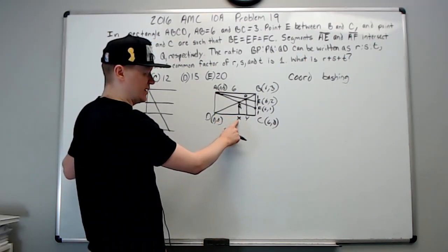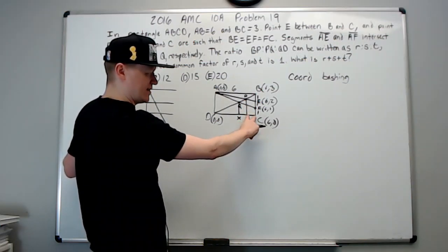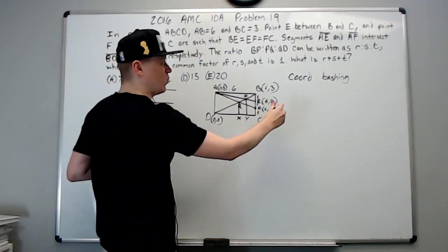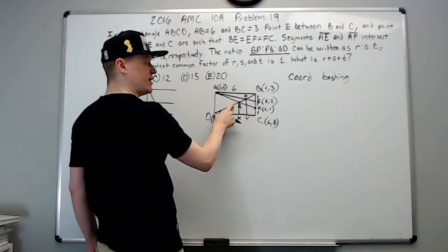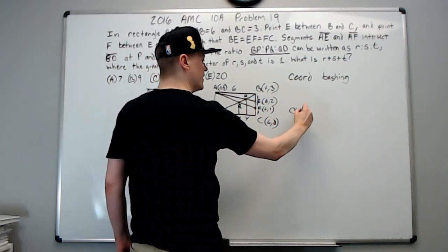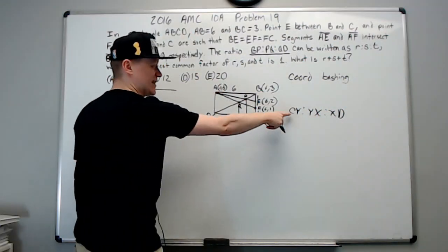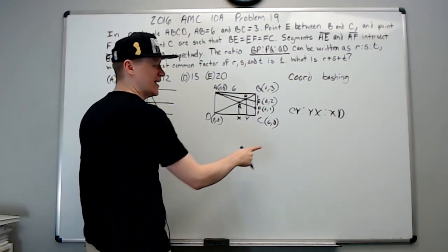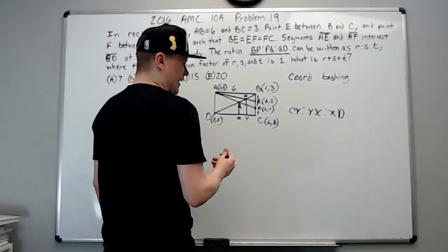Then all we really need is the x coordinate of this, of X, the x coordinate of Y minus the x coordinate of X to get this distance, and C minus Y to get this distance.